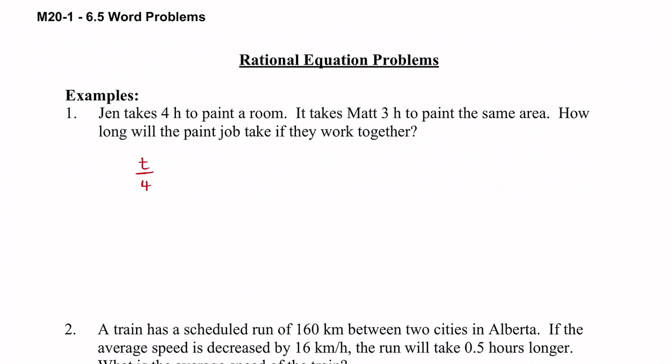So it's going to be t out of four for Jen. And then we had Matt, it took him three hours. So if he painted for say three hours by himself, three out of three, he'd have it all done. For him we're going to say it's t out of three, and these two are working together. We're going to add both of their efforts together and when we do that the job should be a hundred percent done. It should add up to one.